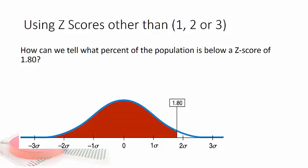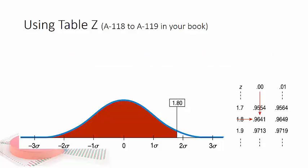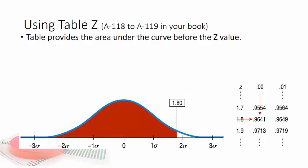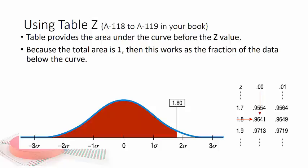How can we tell what percent of the population is below a z-score of 1.80? Well there's actually a Table Z in the back of your book and it provides the area under the curve before the z-value. Since the total area is one, this works as the fraction of the data below the curve. Looking at this, you basically go 1.80, there's 1.8, and there's the hundredths place on the top header there. And you see the number 0.9641.